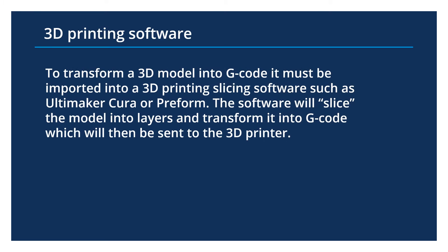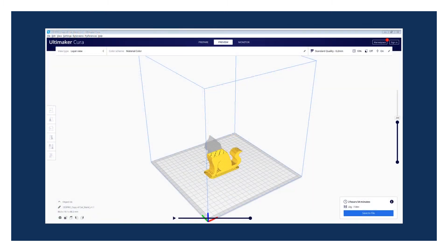Once you have your 3D model, it's time to print it. You'll have to import your model into 3D printing software, such as Ultimaker Cura or Preform. Some of the software is open source, and some of it is proprietary, so you'll have to use the software that comes with the machine. When you import your model, the software will slice it into layers, then transform it into G-code, and that information will be sent to the printer, and then the printer can print it.